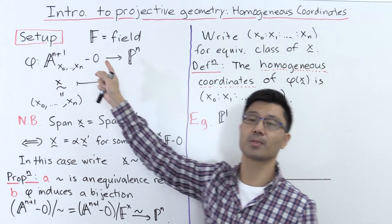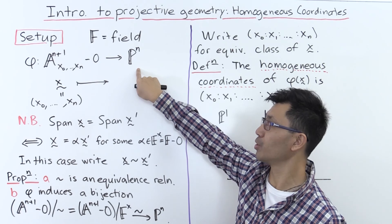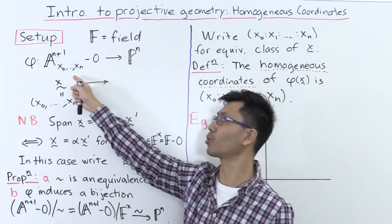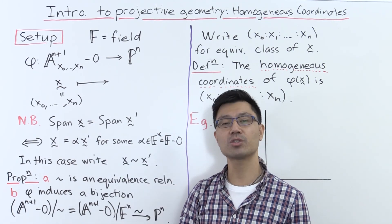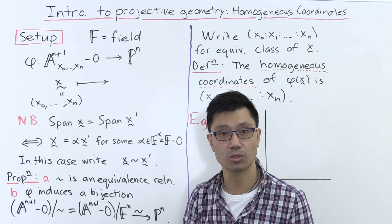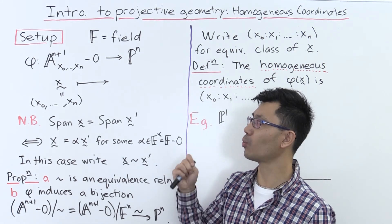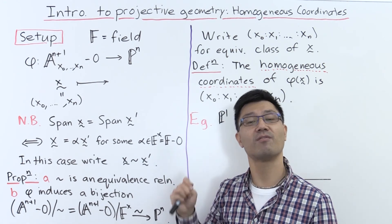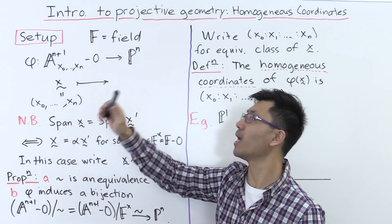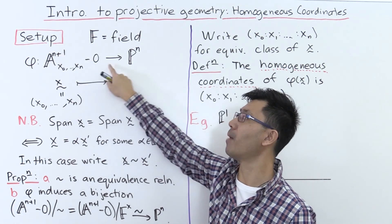So what's our setup? There'll be some field that we work over. What is a projective n-space? What we do is we look inside affine n+1 space — say with coordinates x₀ up to xₙ — and we look at the set of lines which go through zero, in other words the set of one-dimensional subspaces. How do you specify a one-dimensional subspace? The easiest way is to give a basis vector for it. Any non-zero vector inside here — just an element of A^{n+1} minus zero — can be a basis vector.